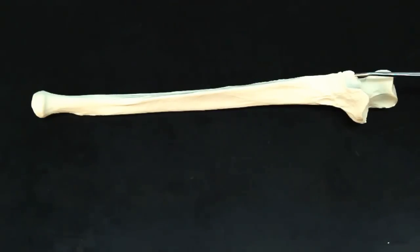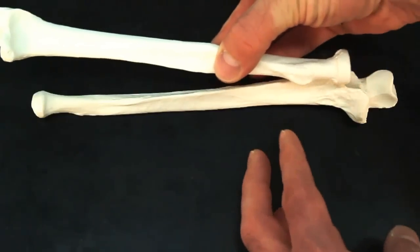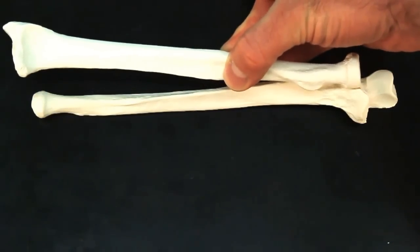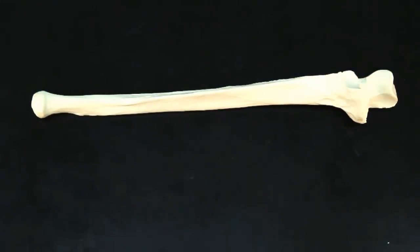What do you think the radial notch is going to articulate with? It articulates with the radial bone. So it fits just like this in there. The round head of the radius articulates with the radial notch of the ulna.